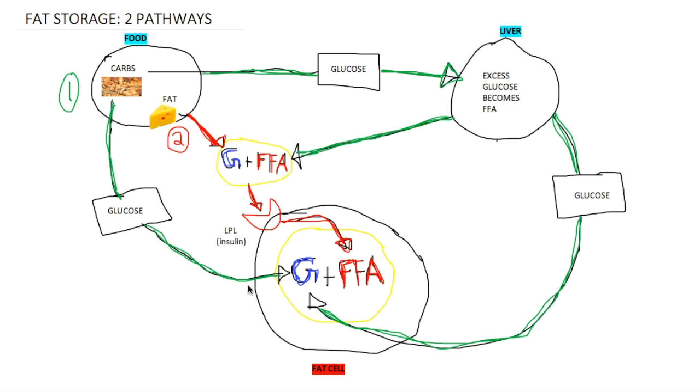The green pathways and then the red pathways. Quick recap: this is the food that you eat on the left side, this is your liver, and this is your fat cell - your belly fat, all the fat you're trying to lose.